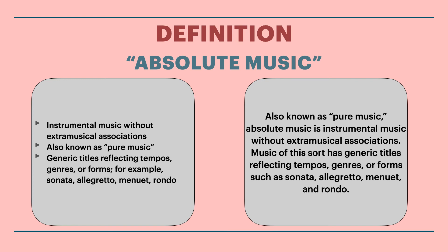Absolute Music, also known as pure music, is instrumental music without extra-musical associations. Music of this sort has generic titles reflecting tempos, genres, or forms, such as sonata, allegretto, minuet, and rondo. Absolute Music stands in stark contrast to the program music we looked at in the Baroque module, where the music was connected to something extra-musical — think of Vivaldi's Spring, for example, where he attached his piece to poetry, or it can be attached to art, a specific feeling, or a painting. There's something intellectually elegant and classical about having a piece of music exist by itself without any extraneous associations, and that's what Absolute Music is.